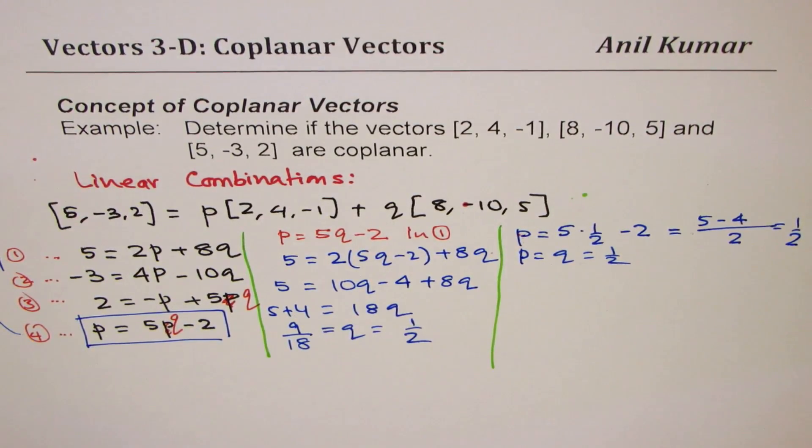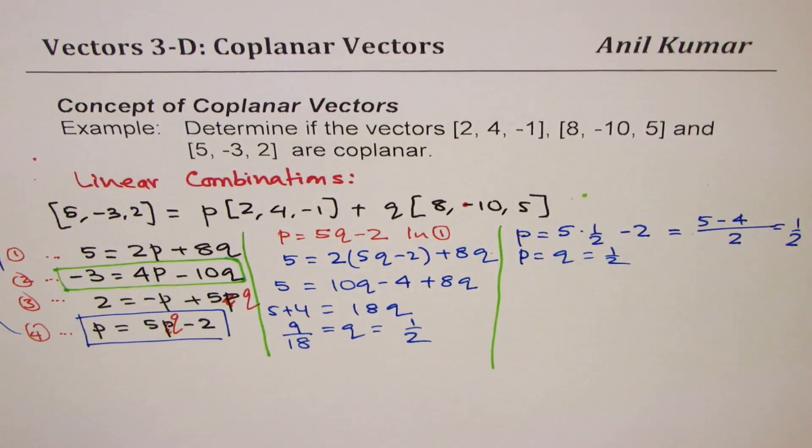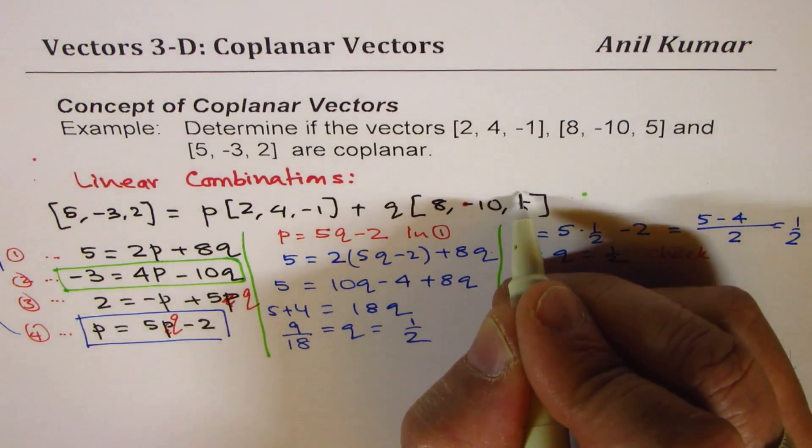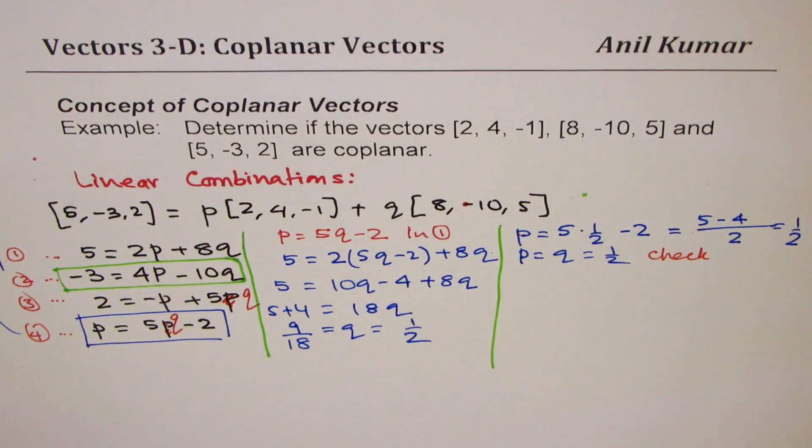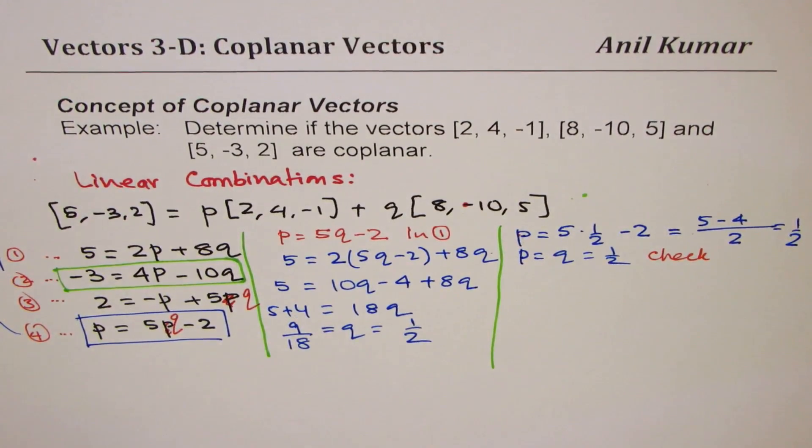Let us check. Let's check with the third equation, which we didn't use so far. So let's check if it is really true for the third position also or not. Rather, in this case, -3 is the second position.